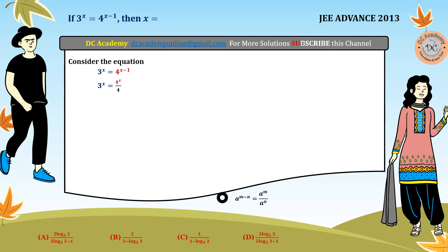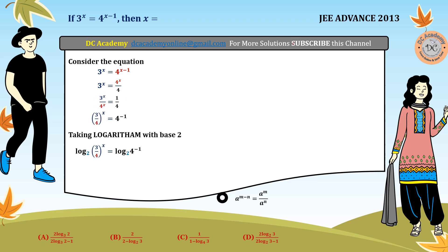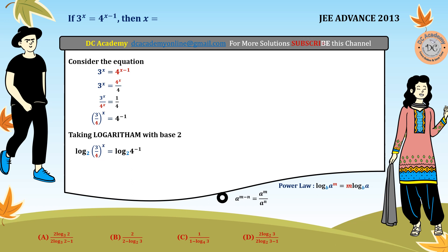We rewrite the equation as (3/4) to the power x equals 4 to the power minus 1. Now we take logarithm with base 2 on both sides, giving log base 2 of (3/4)^x equals log base 2 of 4^(−1). Applying the power law — log of a^m equals m times log a — this becomes x times log(3/4) equals minus log 4.